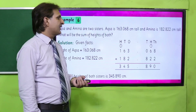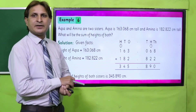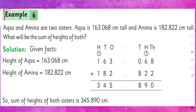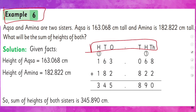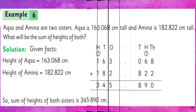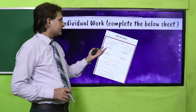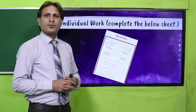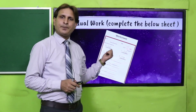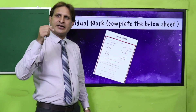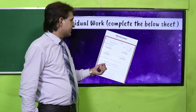Students, ab aate hain example number 6. Woh bhi aise hi karni hai aur yeh aapne khud apni class mein solve karni hai. Methodology wahi hai: sabse pehle given digits ko place value chart mein write karein, aur uske baad inko add kar dein. Students, yeh worksheet hai — aapke teacher aapko provide kar denge. Ise solve karo: simply same column wale digits ko add karein aur phir teacher ko submit kara dein.